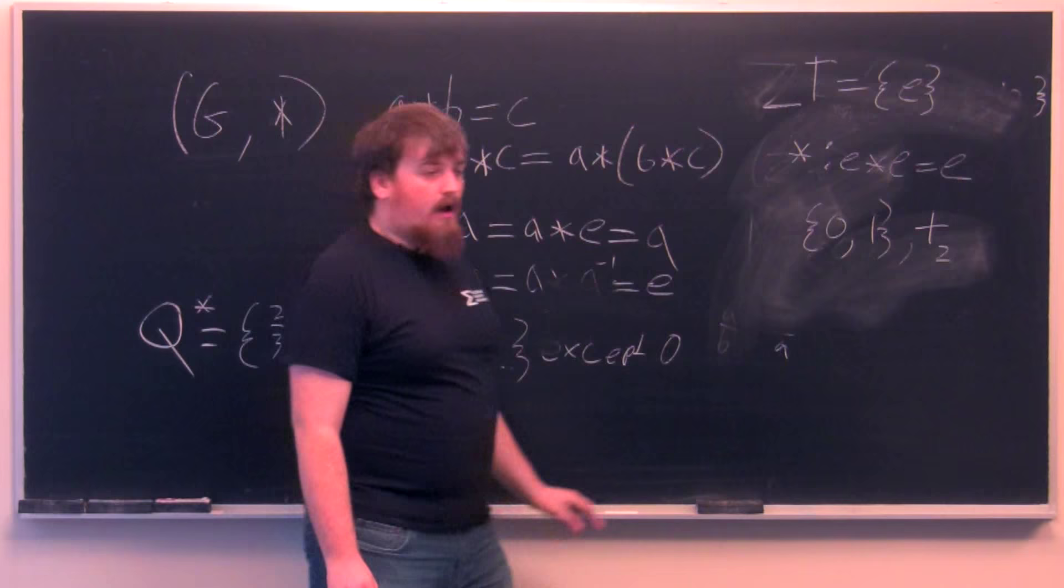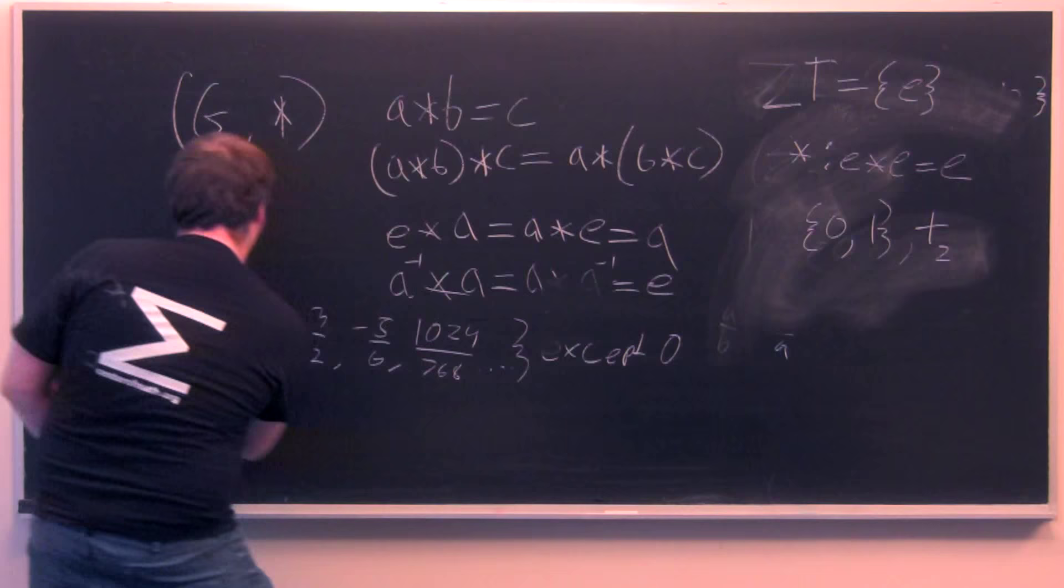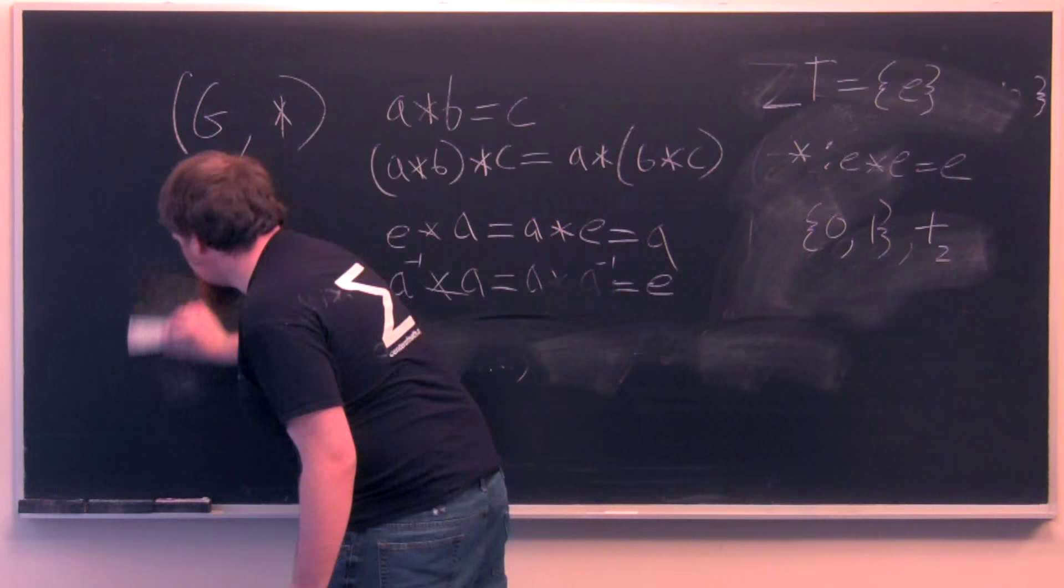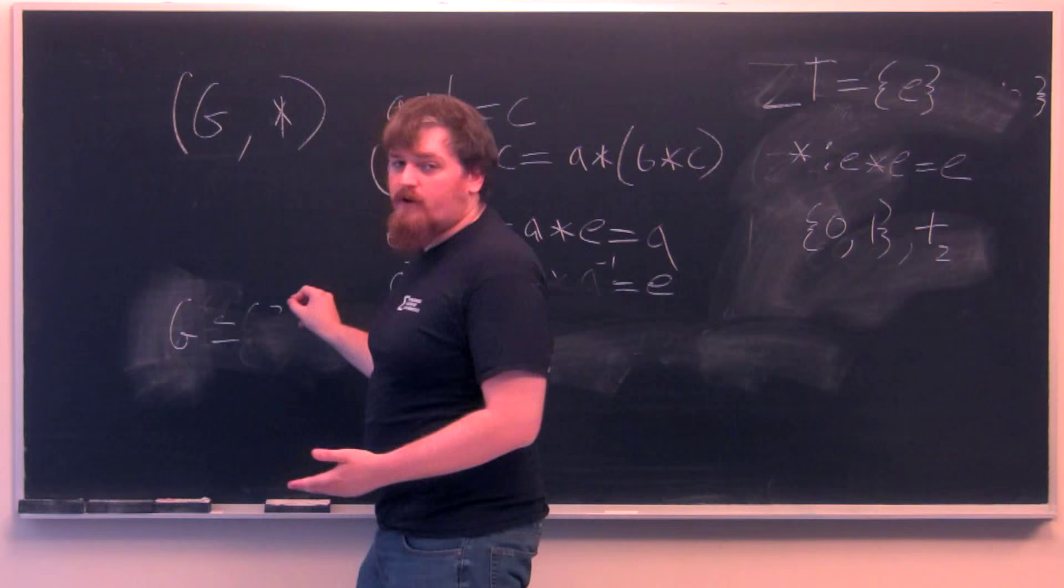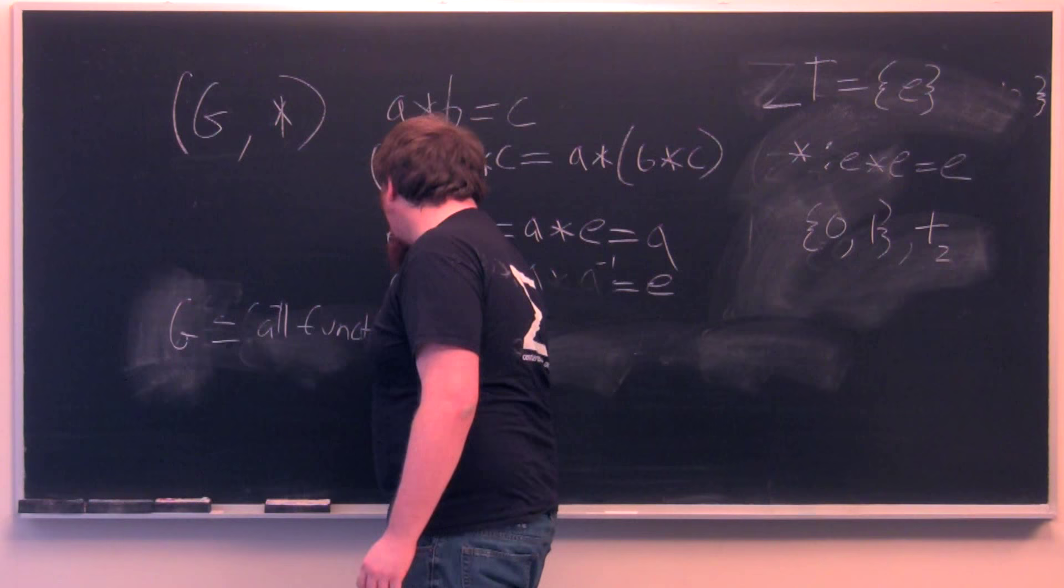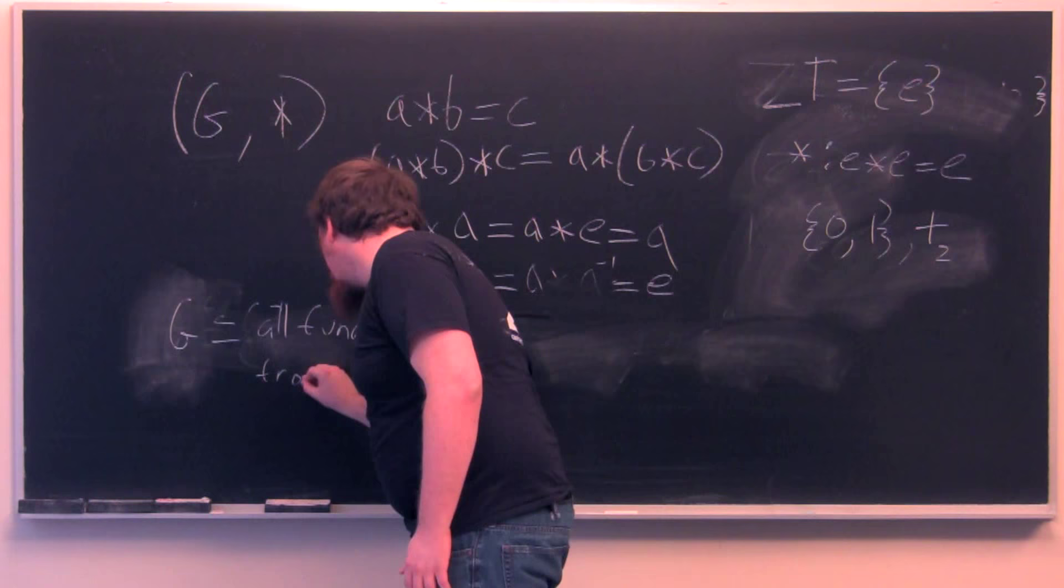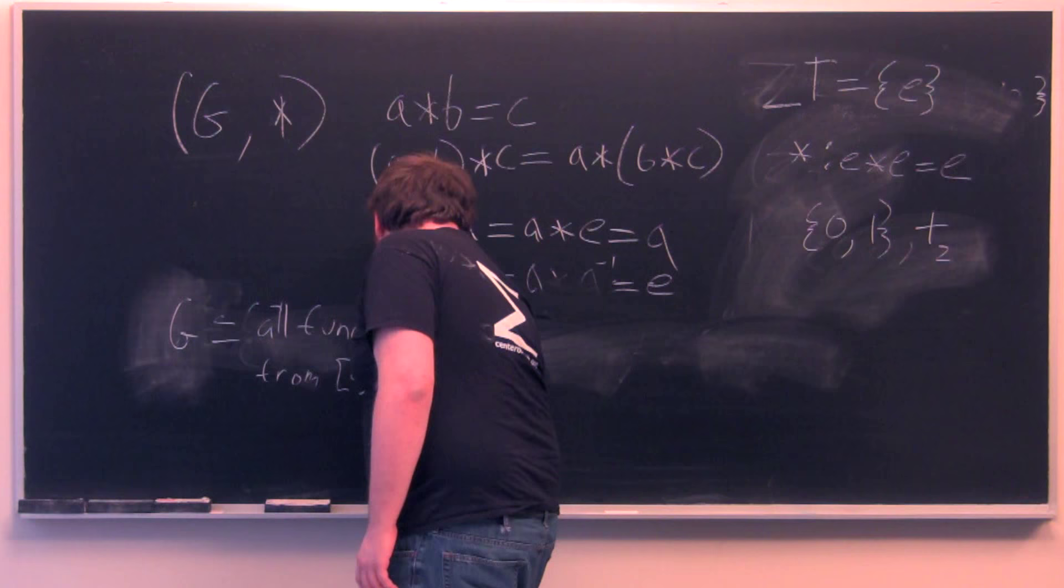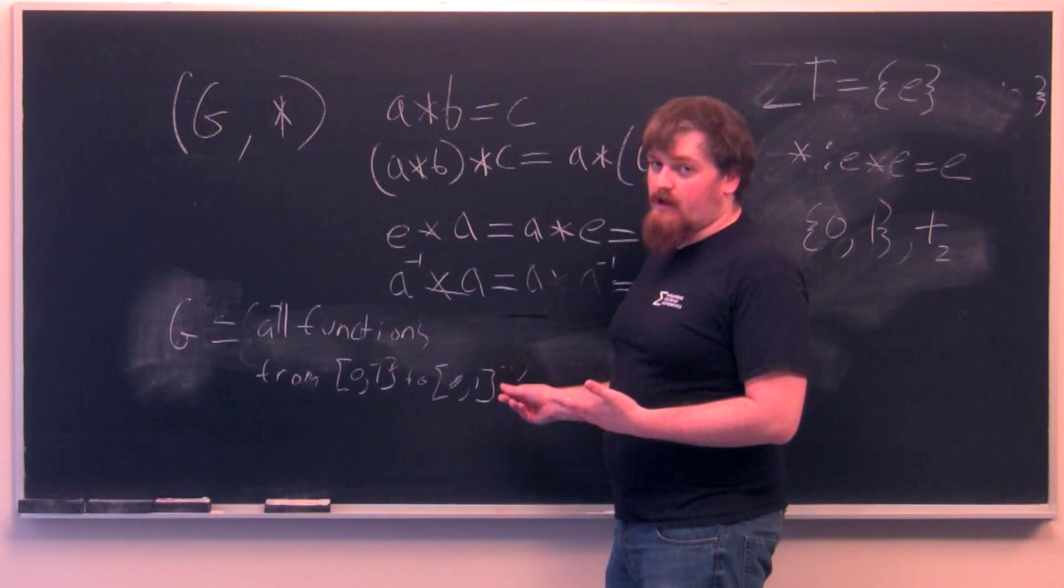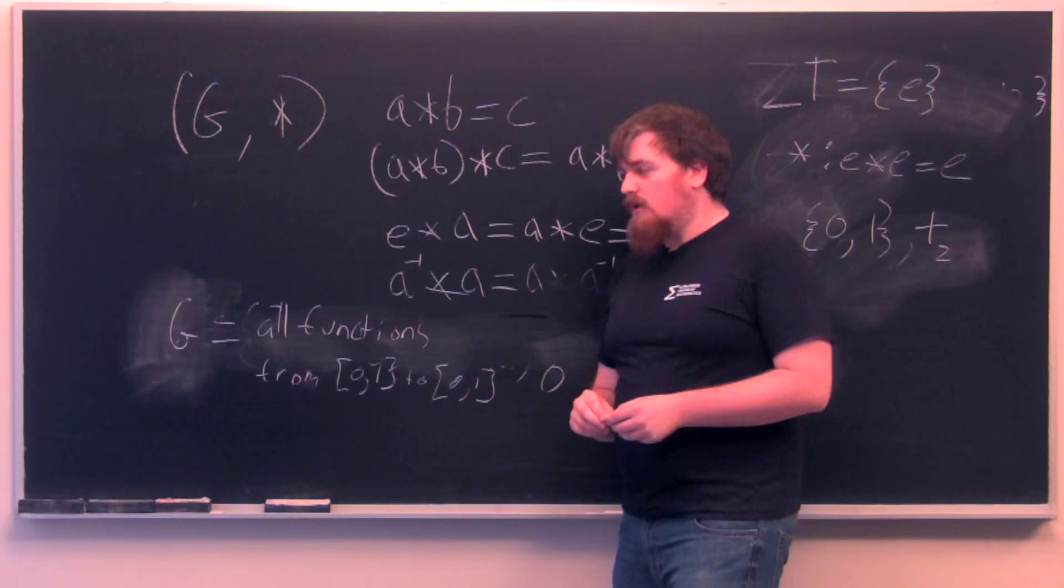For an example, we can talk about, we'll call this group G, equals the set of functions from the interval 0, 1 to itself and whose operation is composition of functions. So, some elements in this group would be called F, G, and H, say.